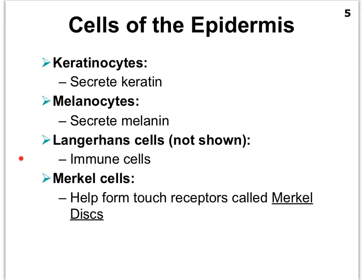Here you see the four cells listed that are found in the epidermis. Now perhaps you're thinking: wait a minute, I thought that the epidermis was made up of stratified squamous epithelial tissue — and that is indeed the case. But the squamous cells are actually very specialized in making something called keratin, and so therefore our squamous cells we call keratinocytes. These are the squamous cells in our hardened epidermal layer of the skin, and the reason why we have that hardened layer is because these keratinocytes produce a protein called keratin.